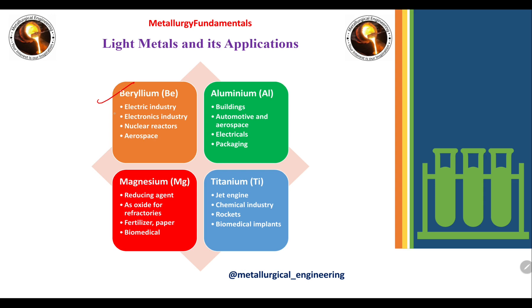Next are light metals and their applications. The first is beryllium, used in the electrical industry, electronic industry, nuclear reactors, and aerospace. The second, and most common, is aluminum, used in making structures for buildings, automotive and aerospace applications, electricals, and packaging.